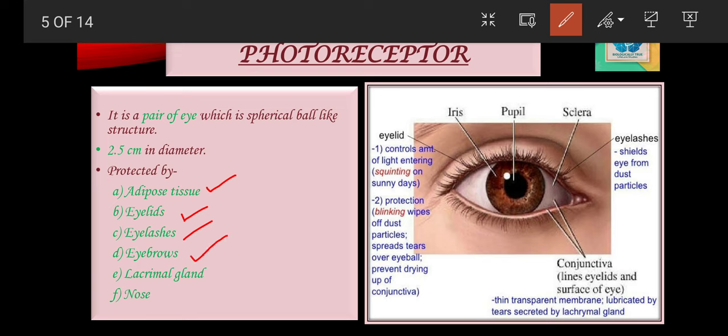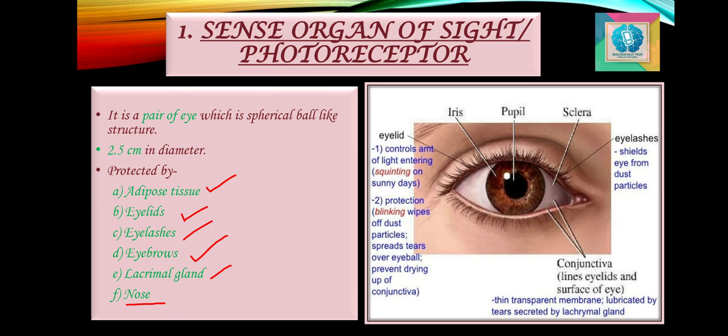The next is the eyebrows — arched structures of skin above the eyes that protect the eye from dust, sweat and rain. The next is the lacrimal glands, present on the lateral aspects of the eye. Their size and shape is like an almond, present below the eyelids. They secrete tears which wash away dust and grit from the eyeballs. These tears contain lysozyme which is bactericidal and kills bacteria. The last protective covering is the nose, present between the two eyes, which acts like a shield and prevents the eye from being hit by any flat object.